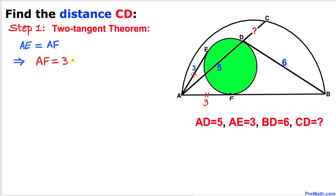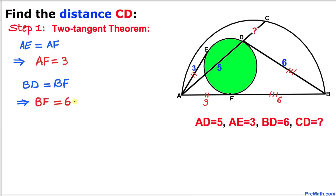Line segment BD and line segment BF are also equal to 6 units. Keep in mind that AE, AF, BD, and BF are all tangent line segments.